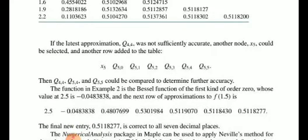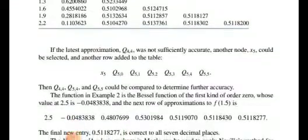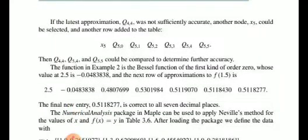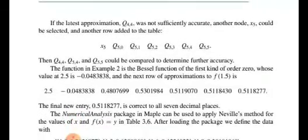The final entry is 0.5118277, which is correct to all 7 decimal places. The correct value to all decimal places is 0.5118277.